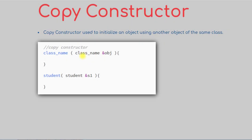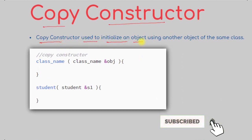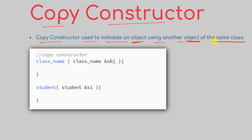In this video we're going to talk about copy constructor in C++ programming. A copy constructor is used to initialize an object using another object, and both objects have to be of the same class type. The syntax of a copy constructor starts with the name of the constructor, which is the name of the class, and it takes a reference to the old object as an argument.